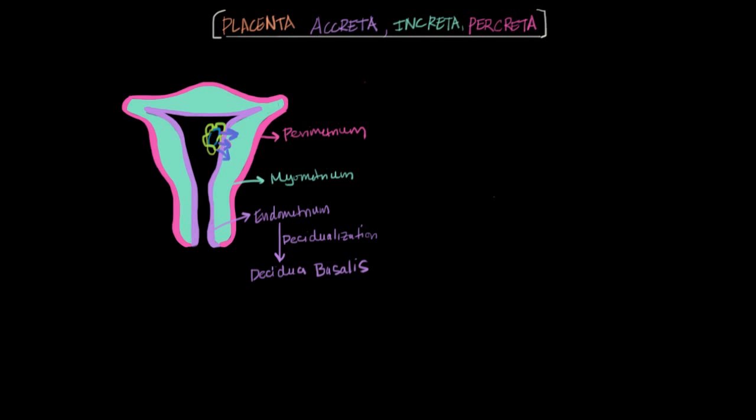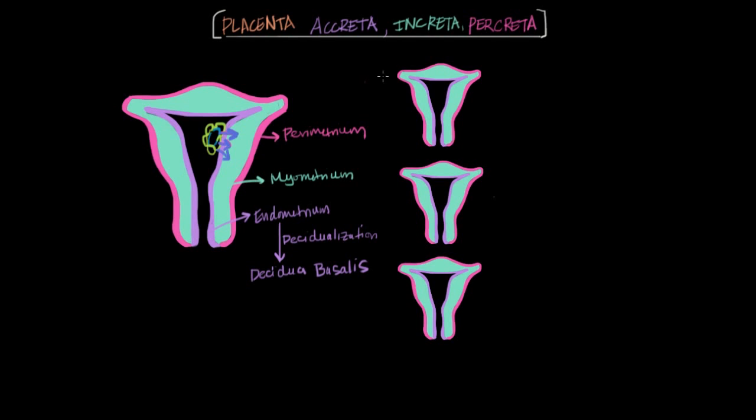And before I go into what causes defective decidua, let's tease apart the three evil stepsisters. So placenta accreta is when the placenta attaches to the myometrium, so it kind of attaches through the decidua basalis and attaches onto the myometrium. And that's called placenta accreta. Now placenta increta is when the placenta actually penetrates into the myometrium.